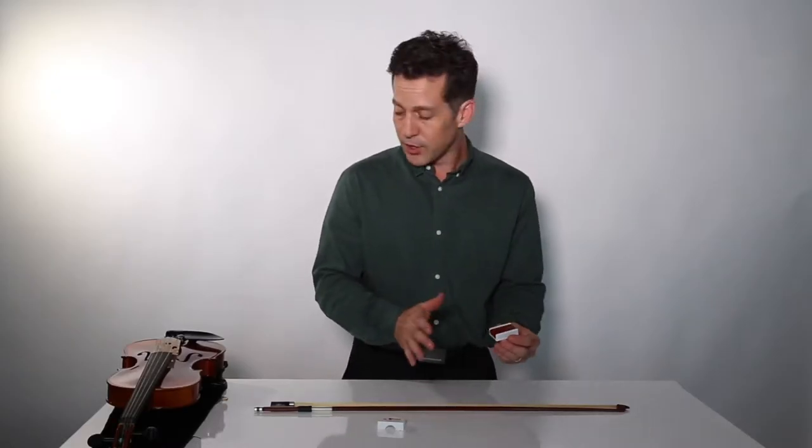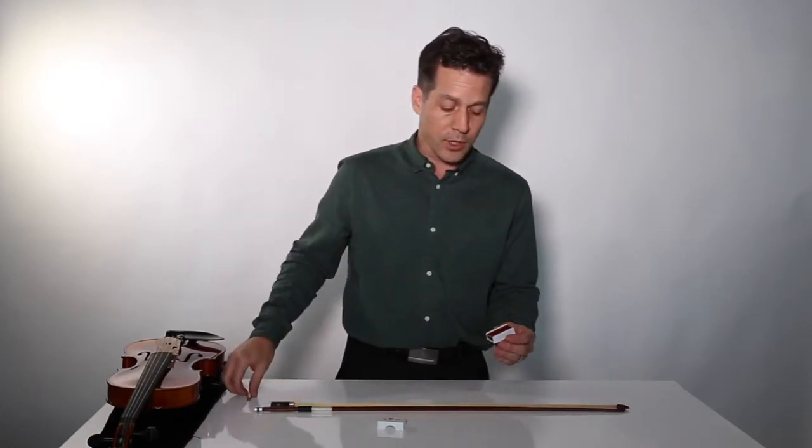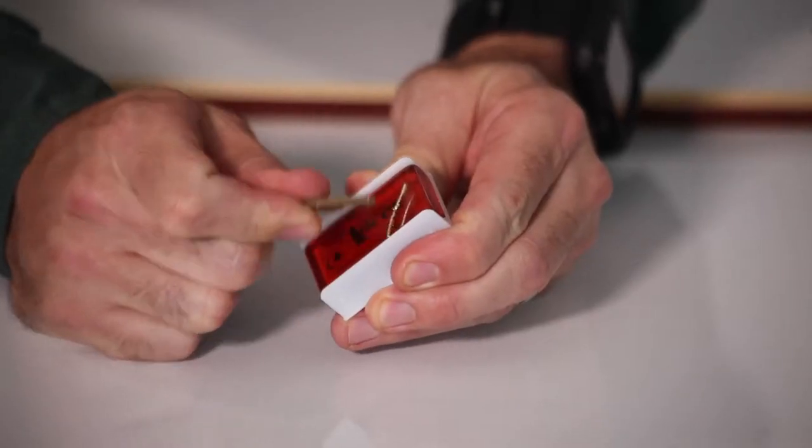It's not really good for rosining your bow and you've got to rough it up a little bit. So you can take a paper clip or a key or whatever is convenient and we're just going to score it.